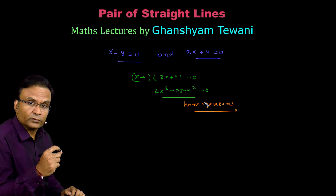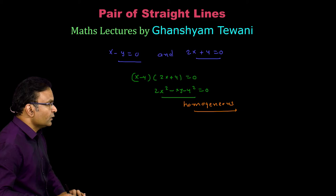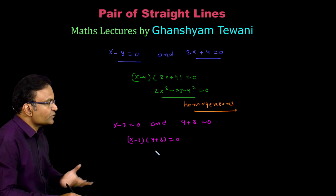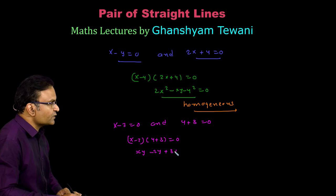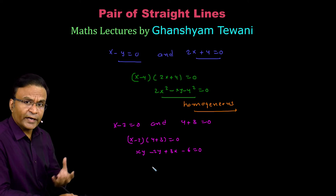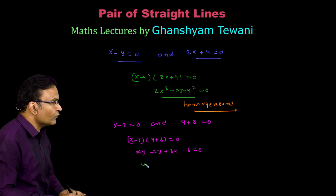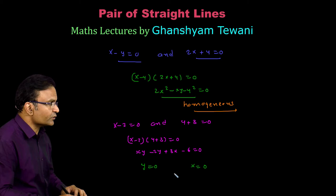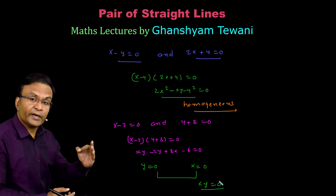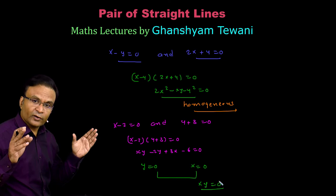Let us take some more examples. Consider lines x minus 2 is equal to 0 and y plus 3 is equal to 0. Multiplying these two equations, we get the pair of straight lines equation: expanding gives xy minus 2y plus 3x minus 6 is equal to 0. Then consider the x axis and y axis. The equation of x axis is y is equal to 0 and that of y axis is x is equal to 0. Multiplying these two gives xy is equal to 0 — this very simple equation represents the pair of coordinate axes.